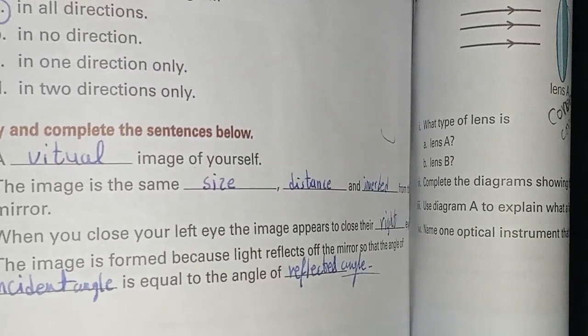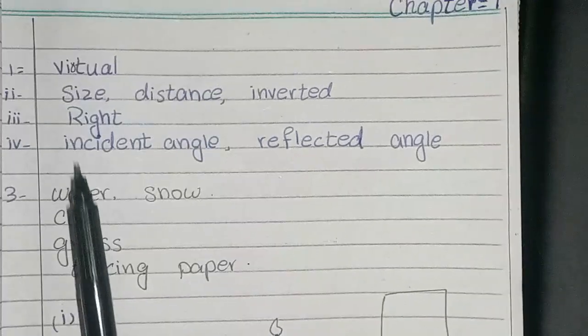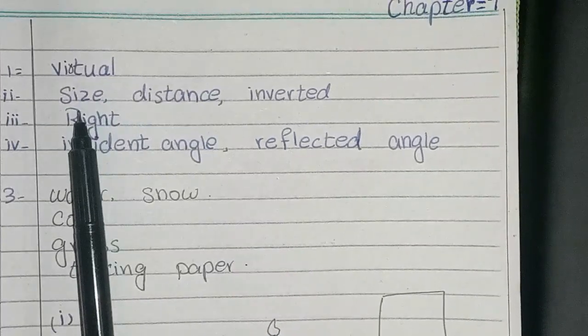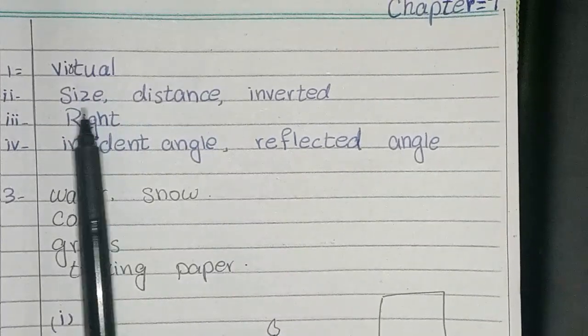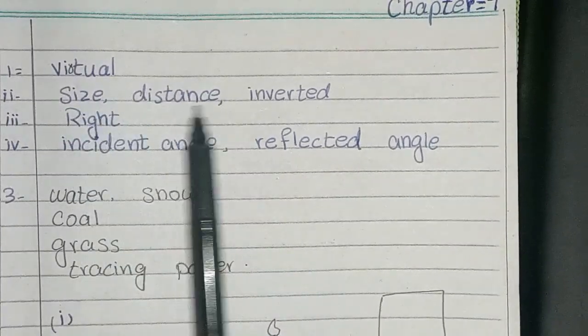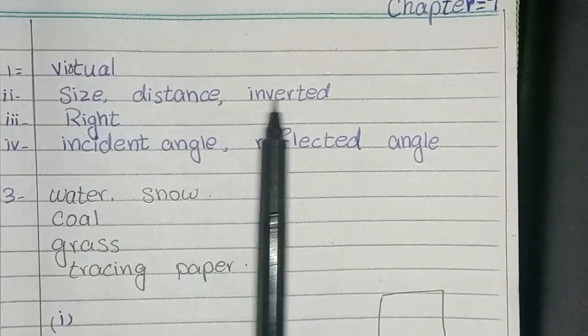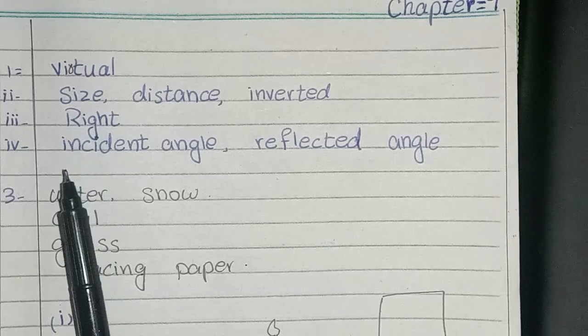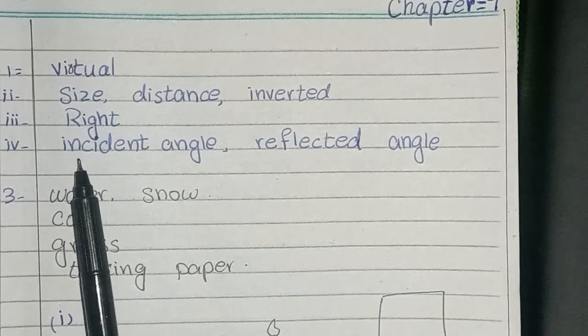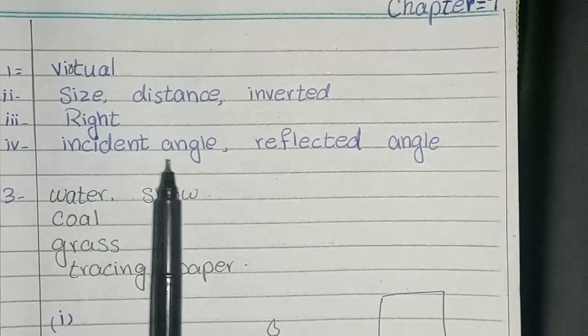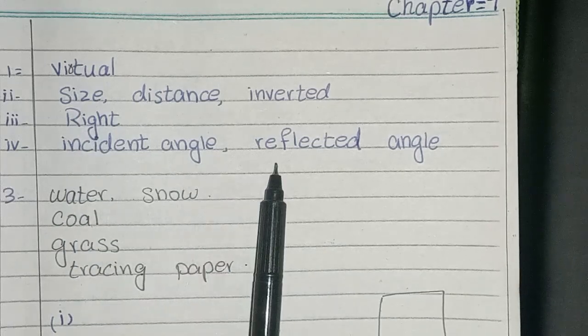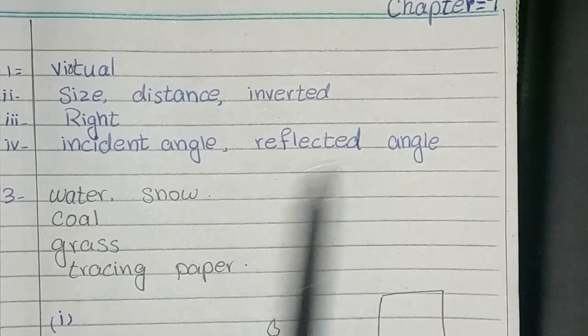The next question is copy and complete the sentences below. The first blank is virtual. The second blank is size. Distance. Inverted. The third one is right. The last one is incident angle. Reflected angle.